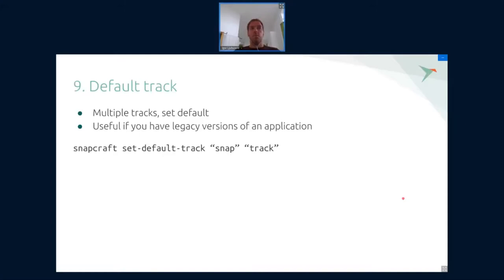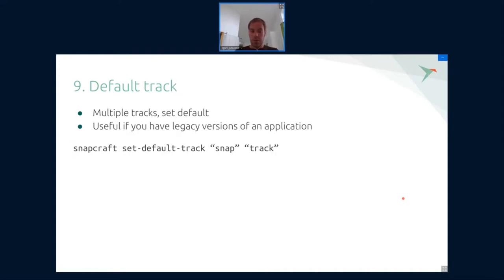Default Track. Most people will probably just have one track — one main path to how they publish their Snap. Some people may have multiple tracks: a legacy track, the latest track (which is the default one), or numbered version tracks. You may want your users not to use the latest or the legacy track by default. You can actually set which track is the default one, so when people install without additional arguments they get the desired version. This can also help you test how different versions behave or manage staggered installation.